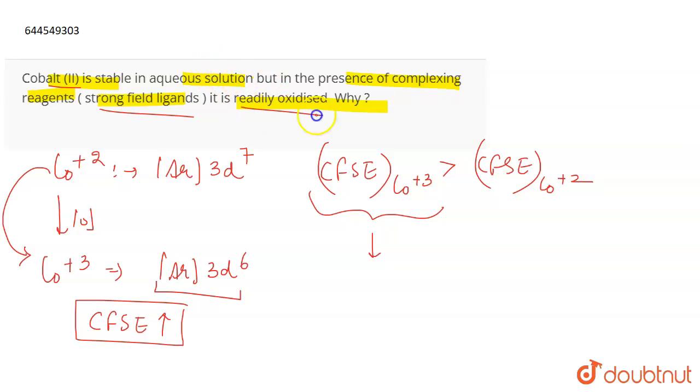So this is the reason that it is readily oxidized and the complex shows a hybridization of D2 SP3.